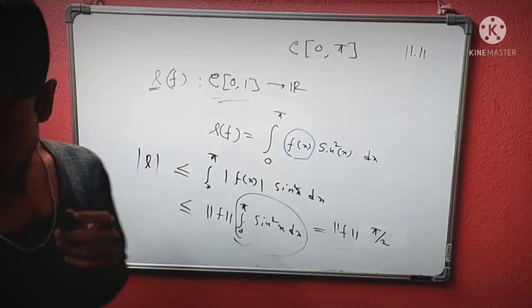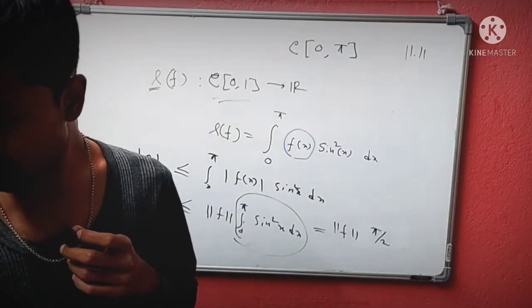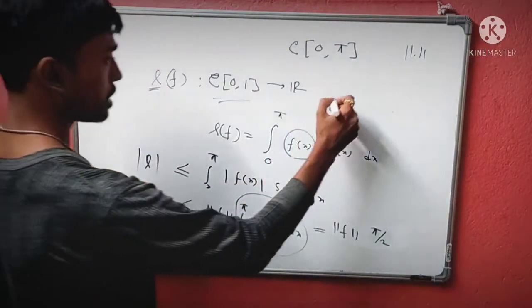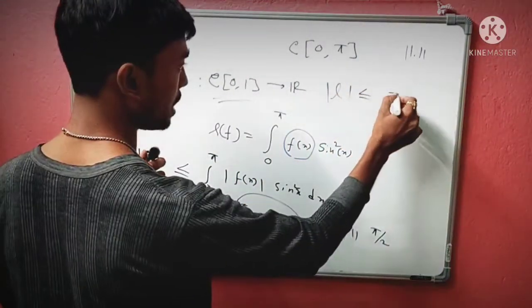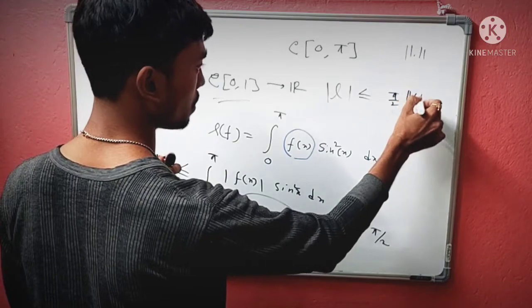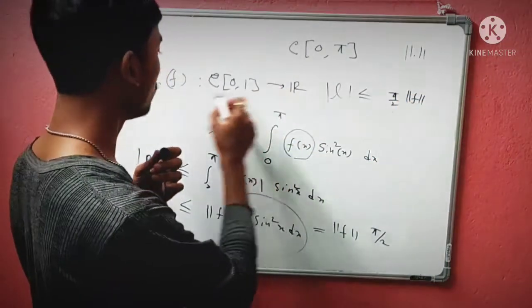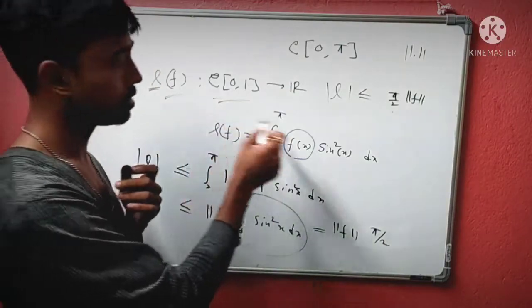What we get here is very important. We have |L(f)| ≤ (π/2)||f||. We need a function so that |L(f)| = π/2.